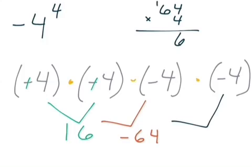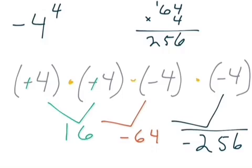I have a negative here in my 64, so I should get negative 256. So I solved for negative 4 to the fourth power and got negative 256. Did I do it correctly? Fact or fib?